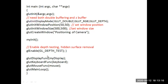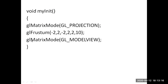glutInit function is called from the main function, and we call myInit function. In myInit, glMatrixMode sets the projection mode. The glFrustum function is used as the perspective viewing function. Six parameter values are passed, indicating x min, x max, y min, y max, and near and far plane distances.